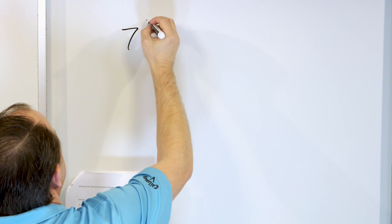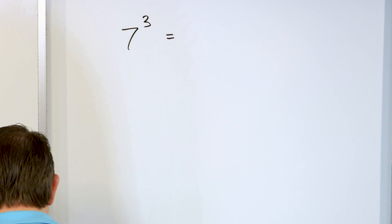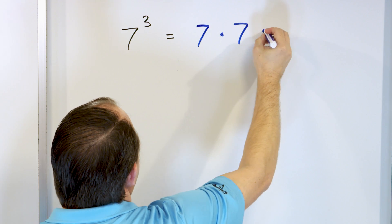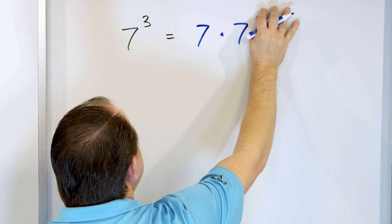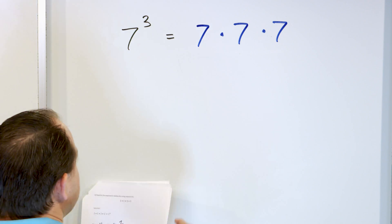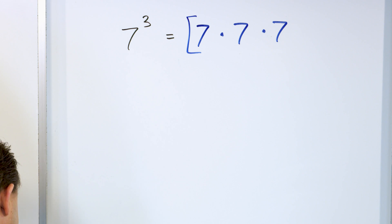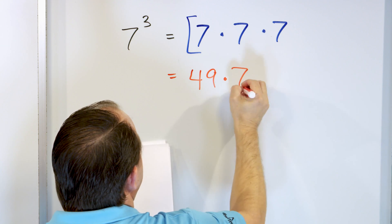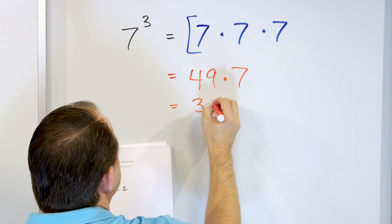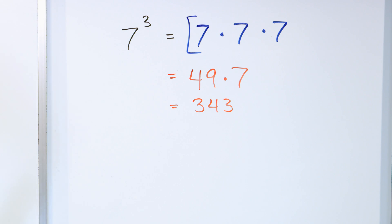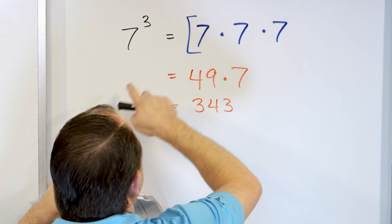Let's take a look at seven to the power of three. How would I write this as a product of factors? It's going to be seven times seven times seven. If I just left it at seven times seven, that would be seven squared. It's got to be three of them because it's seven to the power of three. Seven times seven is 49, and 49 times seven is 343. So if you take seven to the power of three in your calculator, you get 343.